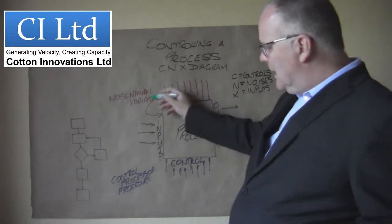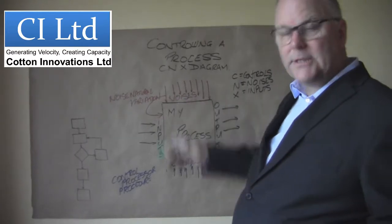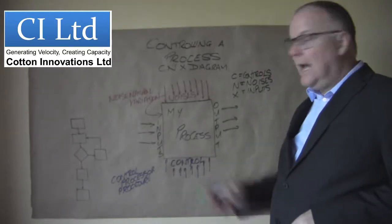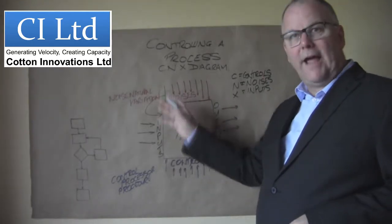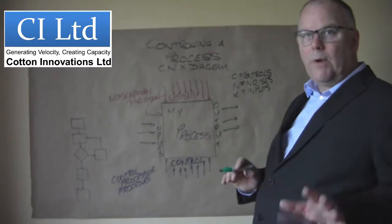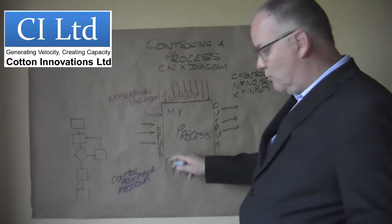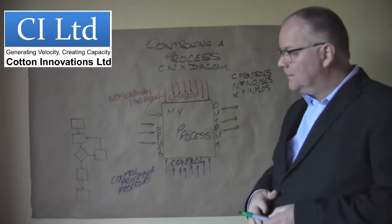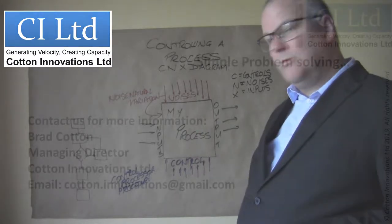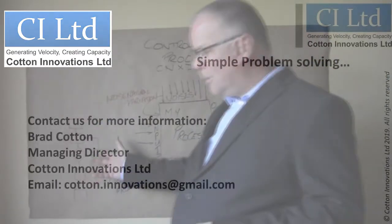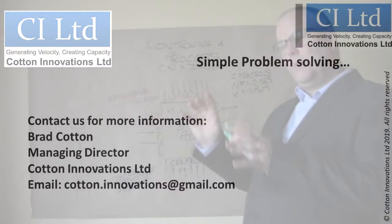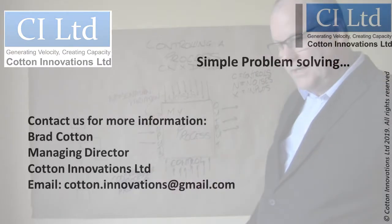Now when my noise is driving my process, my natural reaction is to change the input. But an input will not affect or swamp the effects of a noise. The only way you're going to get control of this process is to re-enact that control. So if you're looking to create a good process control, my suggestion would be that you map out your process and then put a CNX map on every step, and you understand how those noises work together.